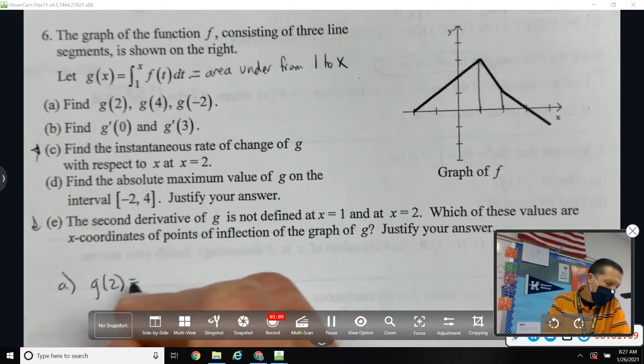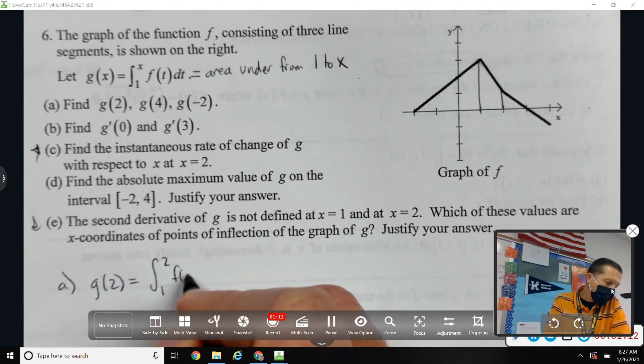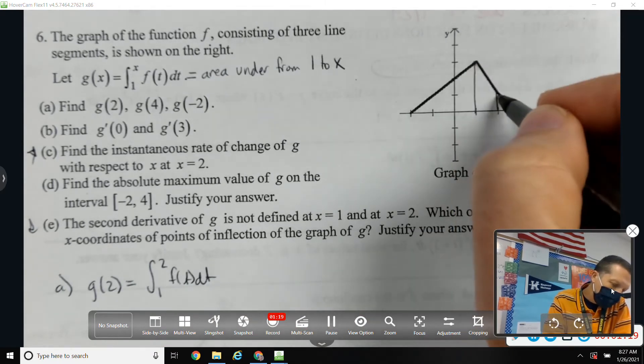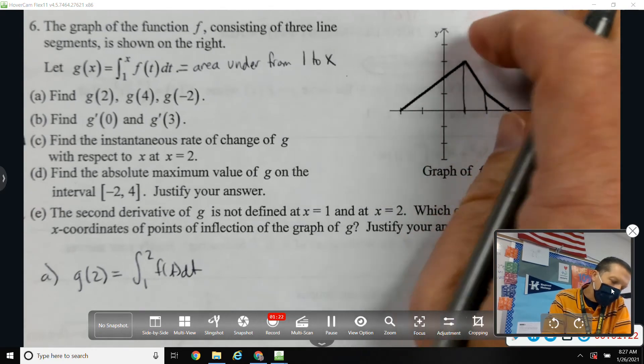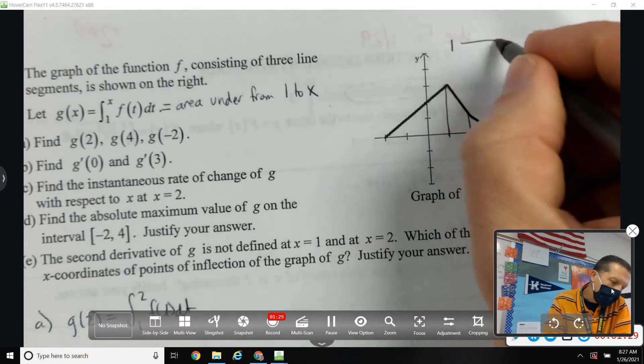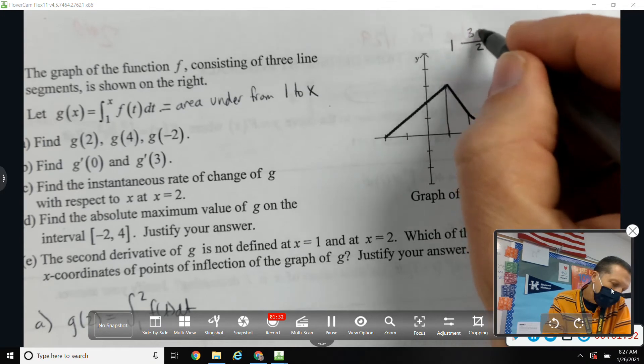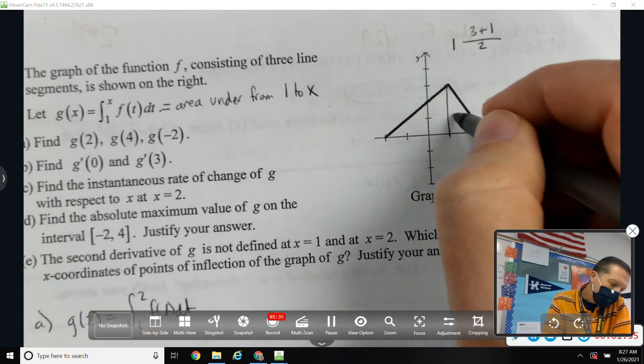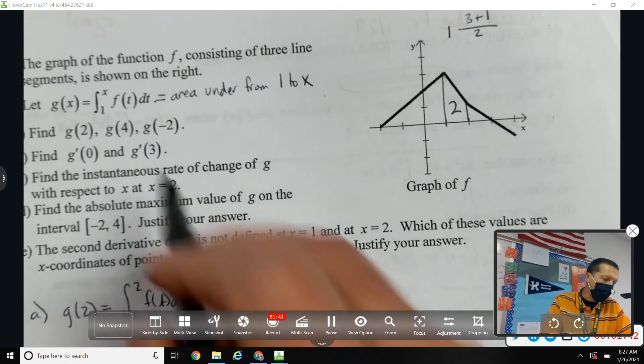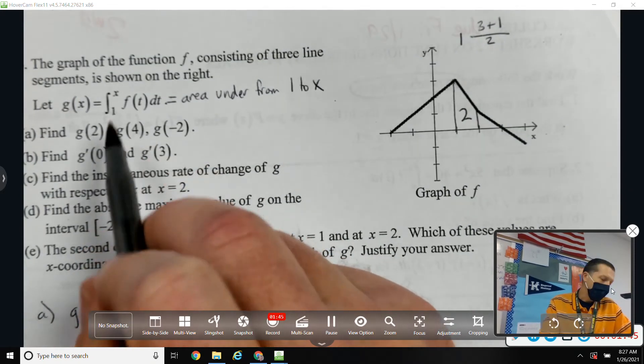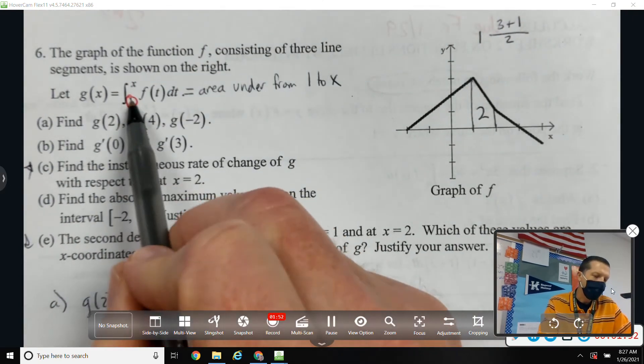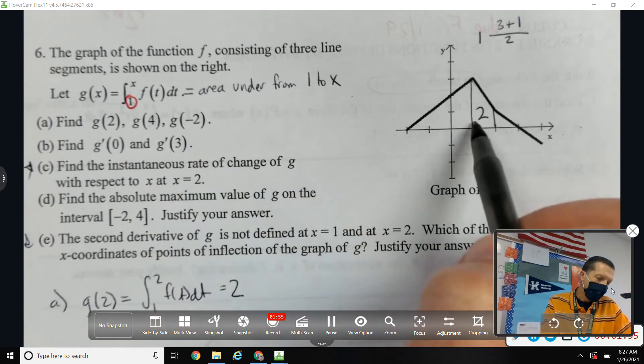Part a, g of 2. So that means the area from 1 to 2 under the graph. Let's see, that goes up to 3, that goes up to 1. So the area of a trapezoid is the width times the average height, which would be 3 plus 1 over 2. So I think that area would be 2. So g of 2 is 2, because I'm starting at 1. I'm measuring from 1 over.